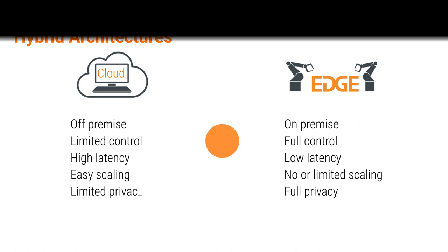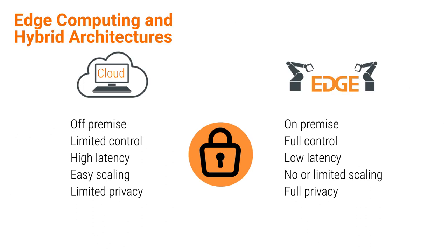I'd like to highlight one more important point, especially for IoT projects: privacy. The moment you transmit data from the edge to the cloud, you're increasing the attack surface, making your data more vulnerable. If you're able to keep and process the data locally on the edge without transmitting it to the cloud, you're reducing the attack surface. Don't send everything to the cloud if you don't need to — you may be risking too much.